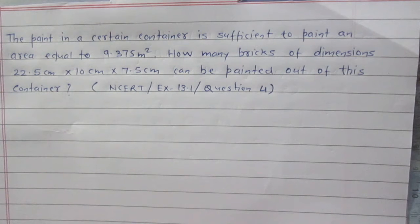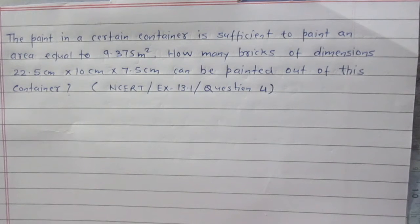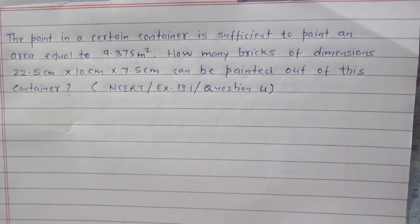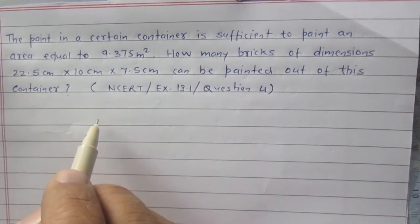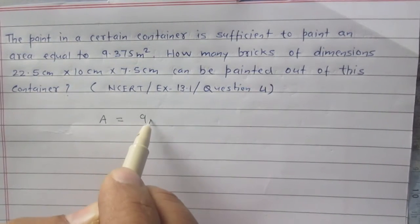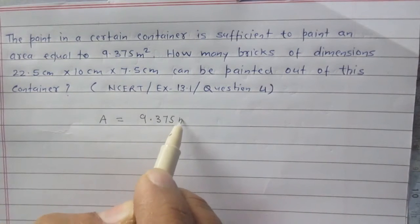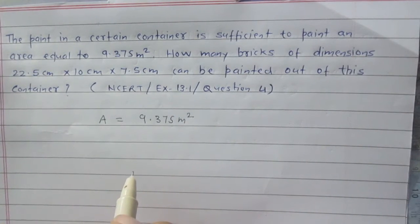The paint in a certain container is sufficient to paint an area equal to 9.375 m². How many bricks of dimensions 22.5 cm × 10 cm × 7.5 cm can be painted out of this container? We are given the maximum area that can be painted is equal to 9.375 m², and we are to paint a certain number of bricks.